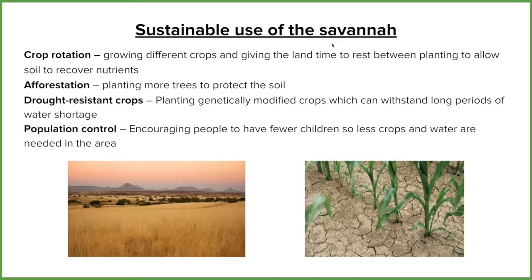The first strategy for the savannah is crop rotation. If people plant the same crop year after year, the same nutrients are taken from the soil repeatedly, meaning the soil never has a chance to recover. Eventually it will lose all its nutrients and desertification will take place, turning soil to sand. By rotating crops — growing one crop, letting the soil rest, then growing a different crop — different nutrients are removed, allowing the first set to be replenished, keeping the soil fertile.